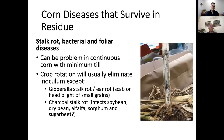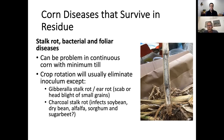In corn, diseases that survive in residue include stalk rots, a number of bacterial diseases, and some foliar diseases. These are becoming a problem because some growers are going to continuous corn. We have a lot of growers in Wyoming growing continuous corn with minimum tillage, leading to a huge buildup of residues on the soil surface. We've seen outbreaks of bacterial diseases because people are going to minimum tillage and continuous cropping — the bacteria survive in crop residue and infect the following year's crop.